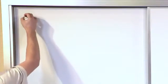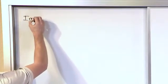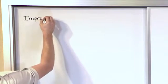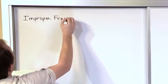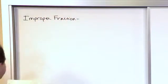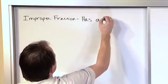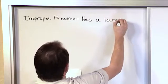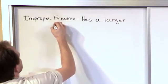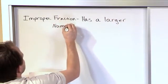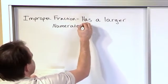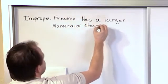And so let's go ahead and write down what an improper fraction is, and then we'll give you some examples so that you can identify them. So here we have an improper fraction. It's a very simple definition. An improper fraction has a larger numerator than denominator.